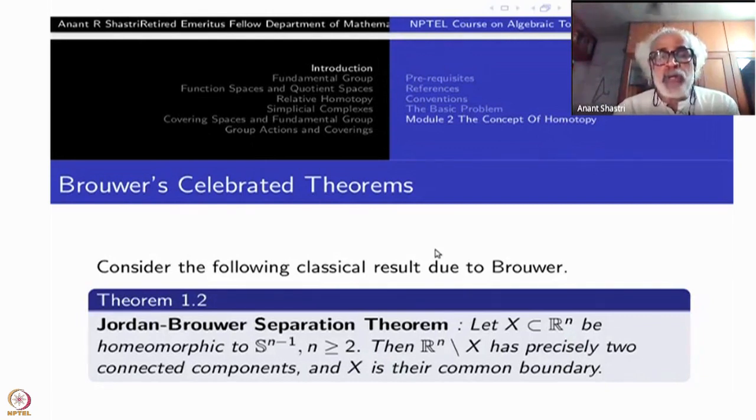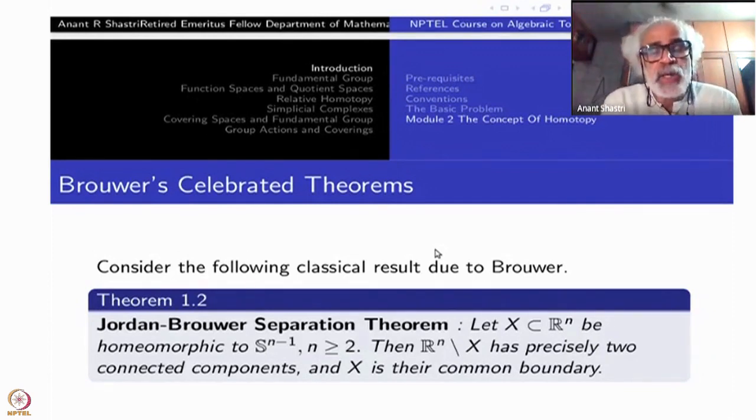Take a copy of S^(n-1) in R^n for n greater than or equal to 2. Then the complement of this S^(n-1), the copy of S^(n-1) I am calling X, the complement of this has precisely two connected components and X happens to be the common boundary.